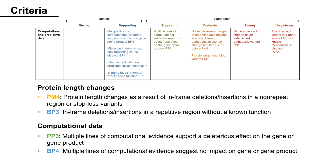Next, Computational Data: PP3 can be assigned when multiple lines of computational evidence support a deleterious effect on the gene or gene product. On the other hand, BP4 can be assigned when multiple lines of computational evidence suggest no impact on the gene or gene product.